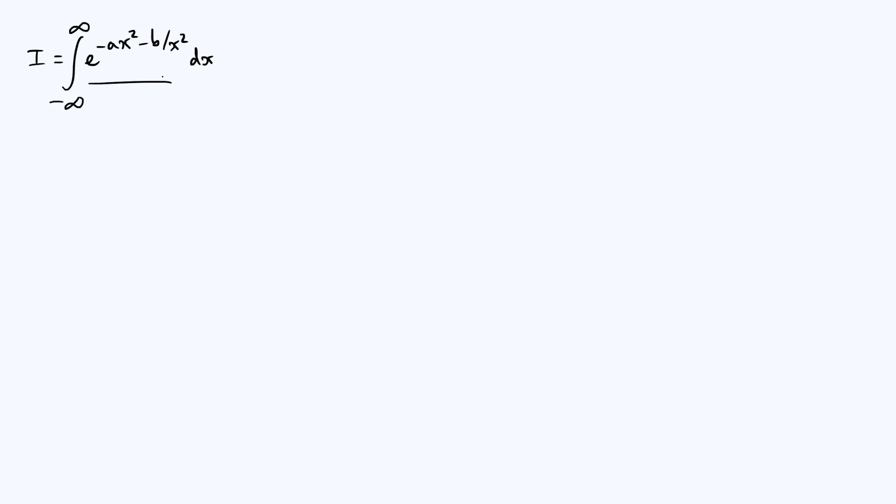Now, if you integrate an even function from minus infinity to infinity, that's the same as integrating from 0 to infinity and just multiplying the whole thing by 2. And so I can take a factor of 2 out and write it as the integral from 0 to infinity of e to the minus ax squared minus b over x squared.